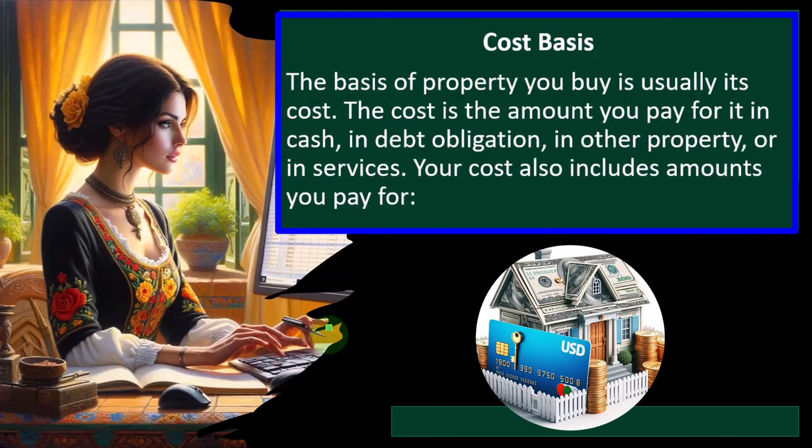Cost basis: the basis of property you buy is usually its cost — the amount you pay in cash, debt obligation, other property, or services. Remembering that even if you financed it with a bank loan, you still own the property; the bank has no ownership rights until you default. So the loan amount is still part of the property's cost basis. Sales tax, freight charges, and installation and testing charges are all included in the cost. If you deducted state and local general sales taxes as an itemized deduction on Schedule A, don't include those taxes in your cost basis — otherwise you'd be double-dipping.